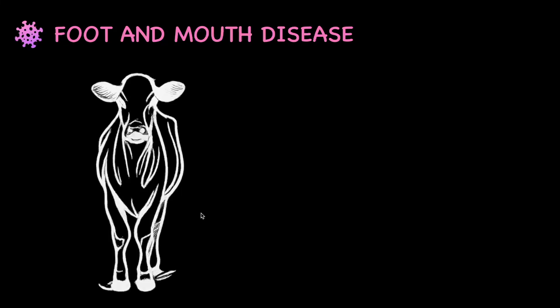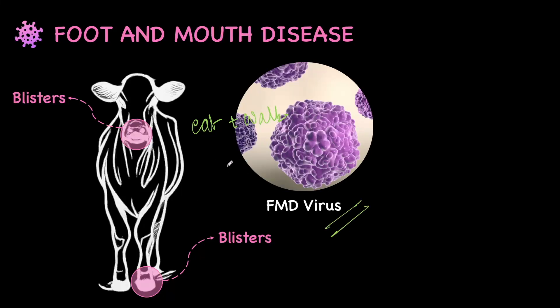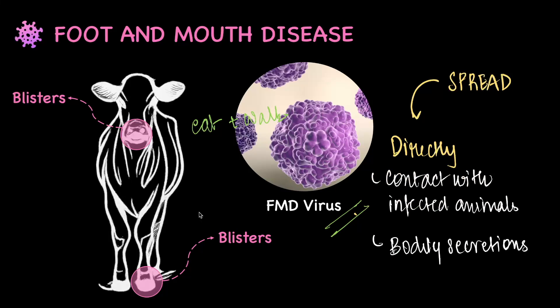Yet another disease that affects cattle is foot and mouth disease, which is a highly contagious disease where animals show blisters in the mouth and sores on their feet, making it very difficult for them to eat and walk. Along with this, they also have drooling saliva. This is caused by a pathogen called the FMD virus. Foot and mouth disease is not a threat to humans and cannot be transmitted to humans unlike anthrax. But it can spread to other animals by direct contact with infected animals or through their bodily fluids, or indirectly through contaminated objects like feed or clothing.